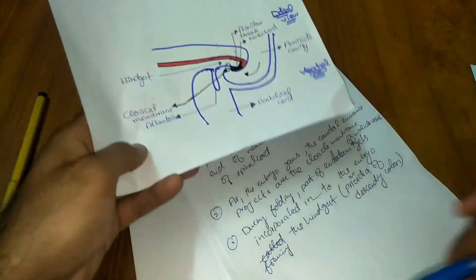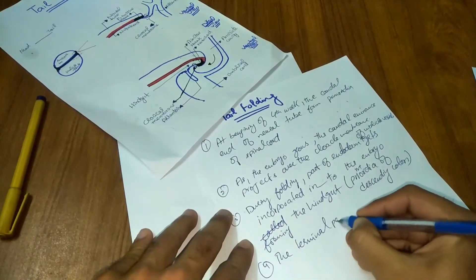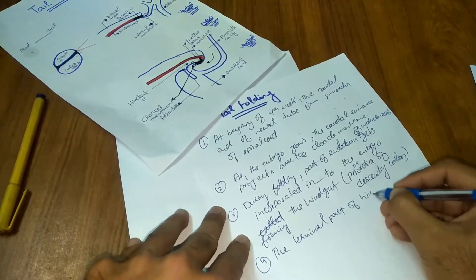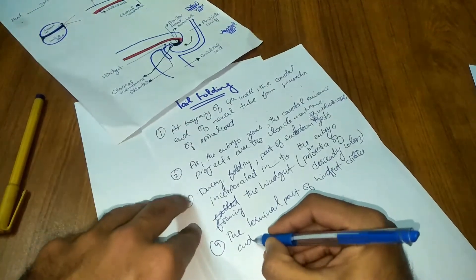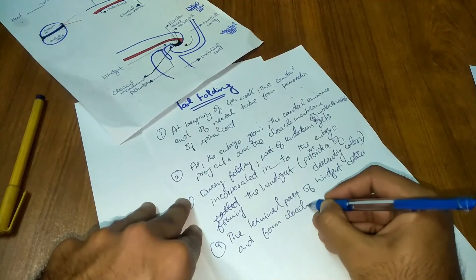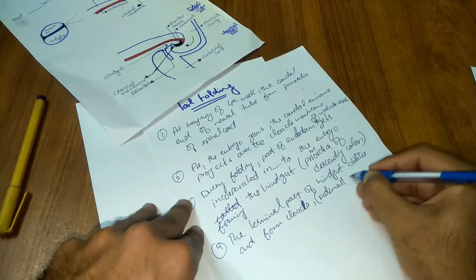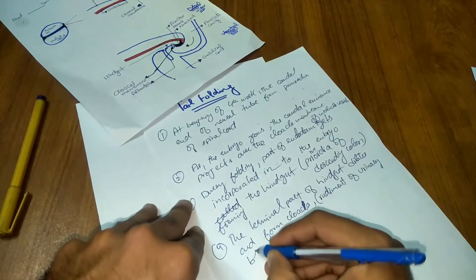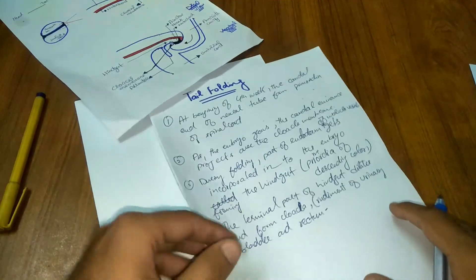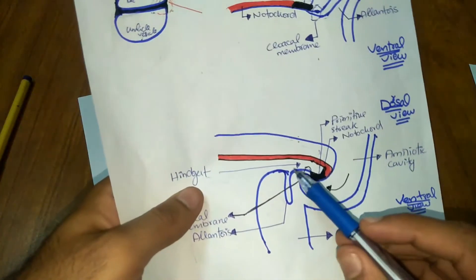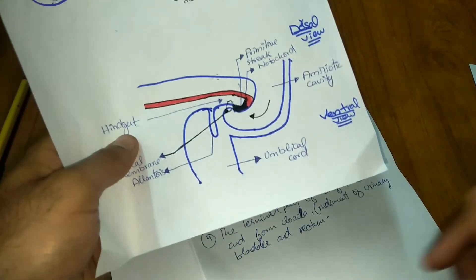Step four: the terminal part of the hindgut dilates and forms the cloaca, which is the rudiment of the urinary bladder. As you can see in the diagram, the terminal part of the hindgut gets dilated and forms the cloaca, which will develop into the urinary bladder in the future.